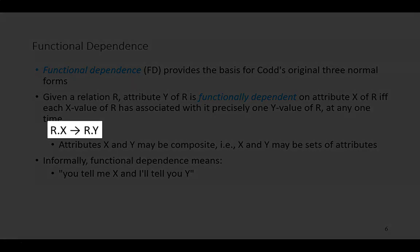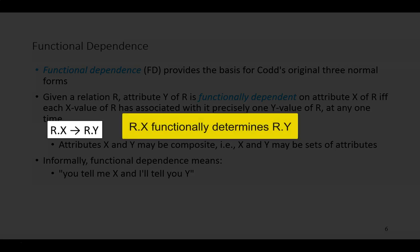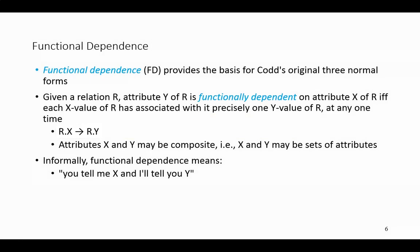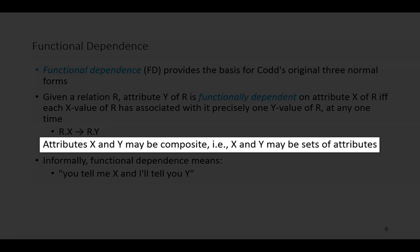Our notation uses an arrow to say that the attribute x of r — r.x — functionally determines the attribute y of r — r.y. Note that here x is an attribute and y is an attribute. However, it's possible that both x and y could represent a set of attributes. That is, x and y could be composite.